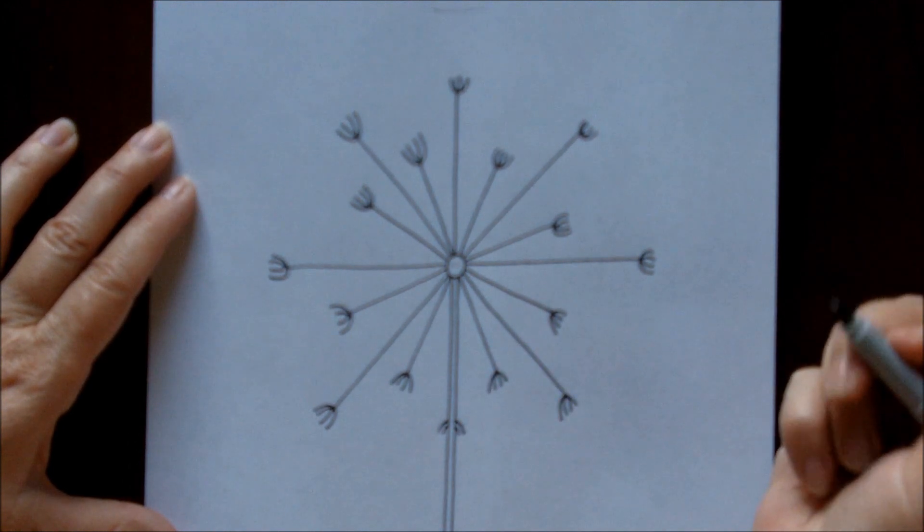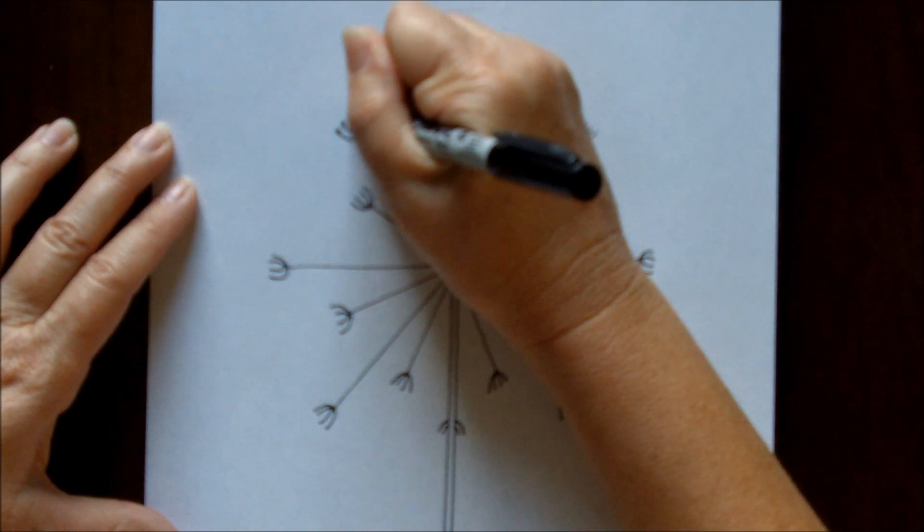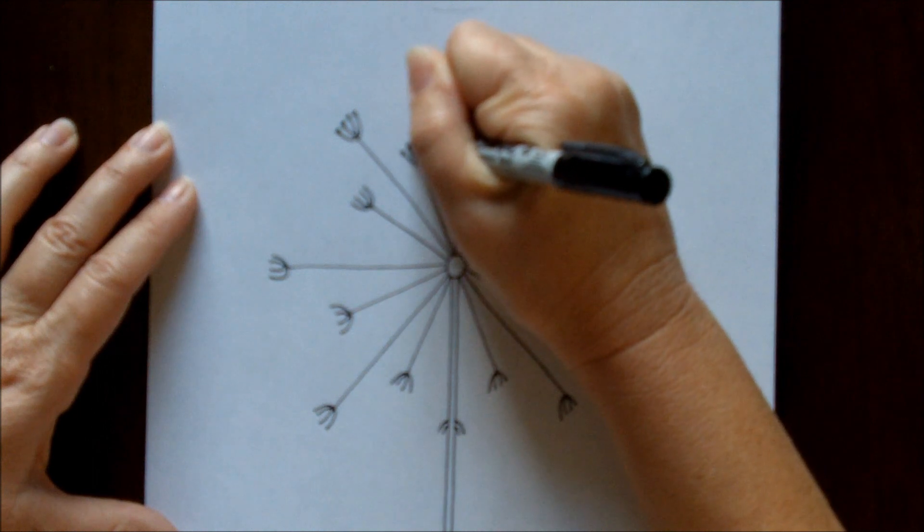All right, now at the top of each one of these lines we're going to put a little dot, a little black dot at the top of each one.